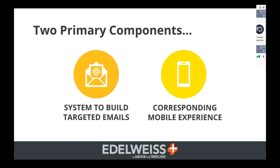There are two primary components to Edelweiss 360, and every time we think one takes precedence over the other, we're reminded that they're linked together. We're much further along on the beta testing on the first one, which is the system to build targeted emails. This is being able to take your customer list, create an email — say, a cookbook-themed email — send it to your cookbook customers, and then track what's happened: clicks, opens, and also who bought. But there's also a corresponding mobile experience. Some people are more excited about the first, some about the second, but a lot of people see them coming together.